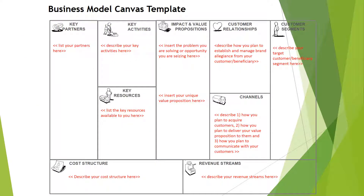Shown here is the business model canvas. What's nice about this is that it's just one piece of paper, whereas a typical business plan is going to be anywhere from 10 to 50 or more pages. What I like about this is that you can quickly get a picture and a view of what the business is all about.